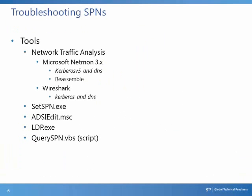Tools useful for troubleshooting SPNs include network traffic analysis tools like Network Monitor or Wireshark. In Network Monitor, we can use filters like Kerberos V5 and DNS. In Wireshark, similar filters would be Kerberos and DNS. SetSPN.exe is a command-line tool that can be used to list, add, or delete SPNs. A GUI-based tool would be ADSI Edit. LDP.exe and QuerySPN.vbs are also useful in troubleshooting SPN issues.